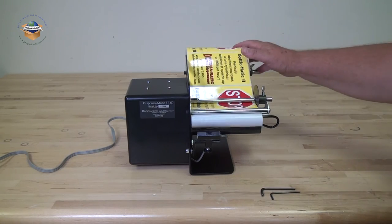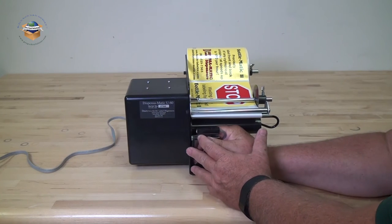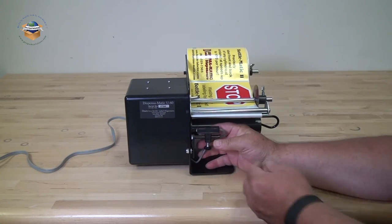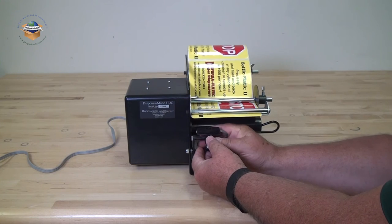Before you turn the unit on, it's a good idea to back your photo eye up. And then as you scoot it out, the label dispenser will run.